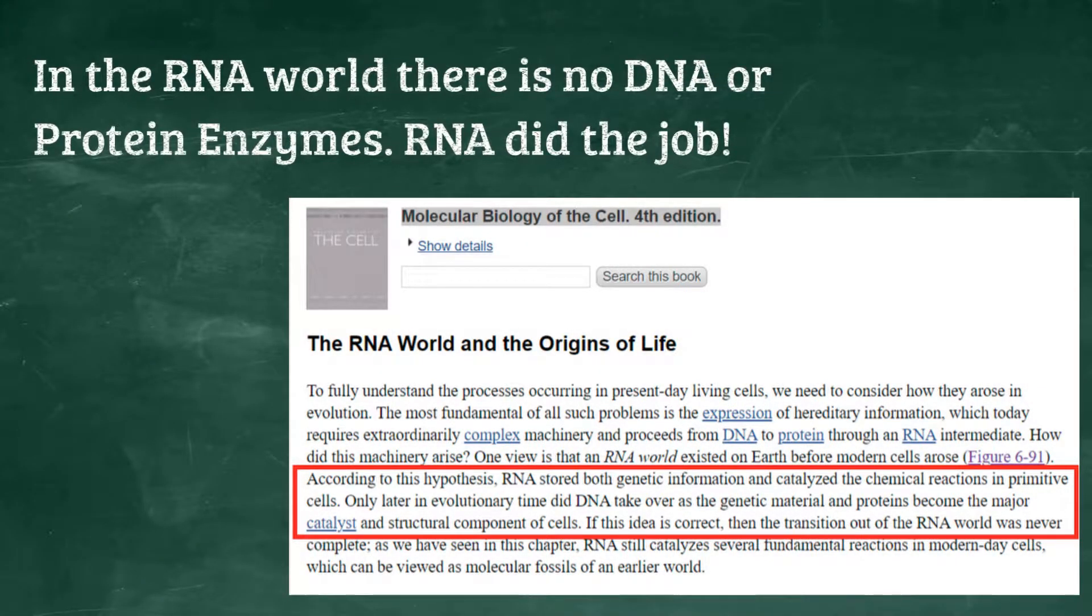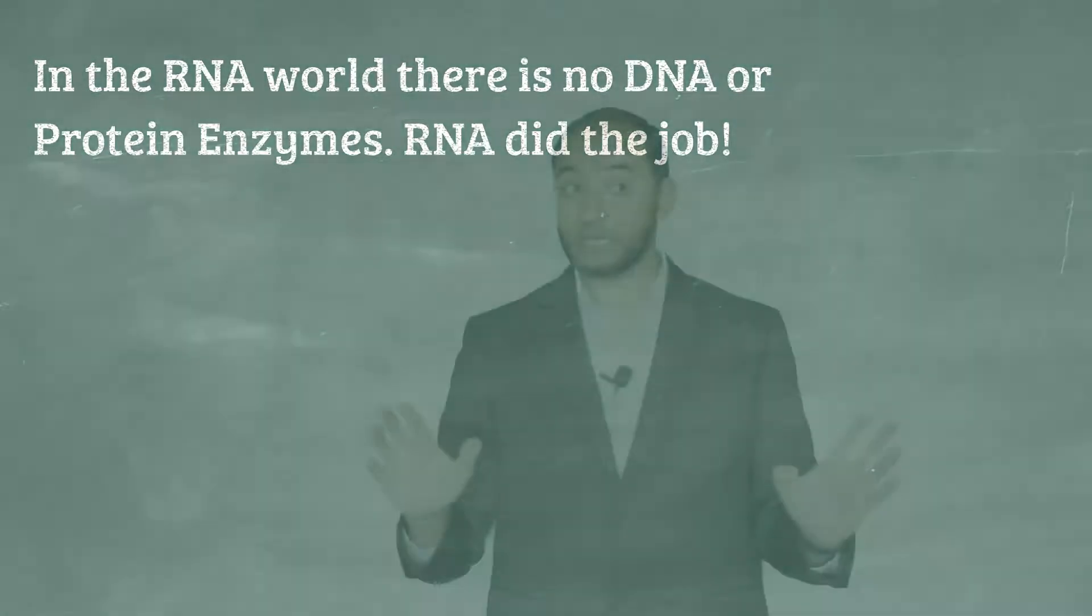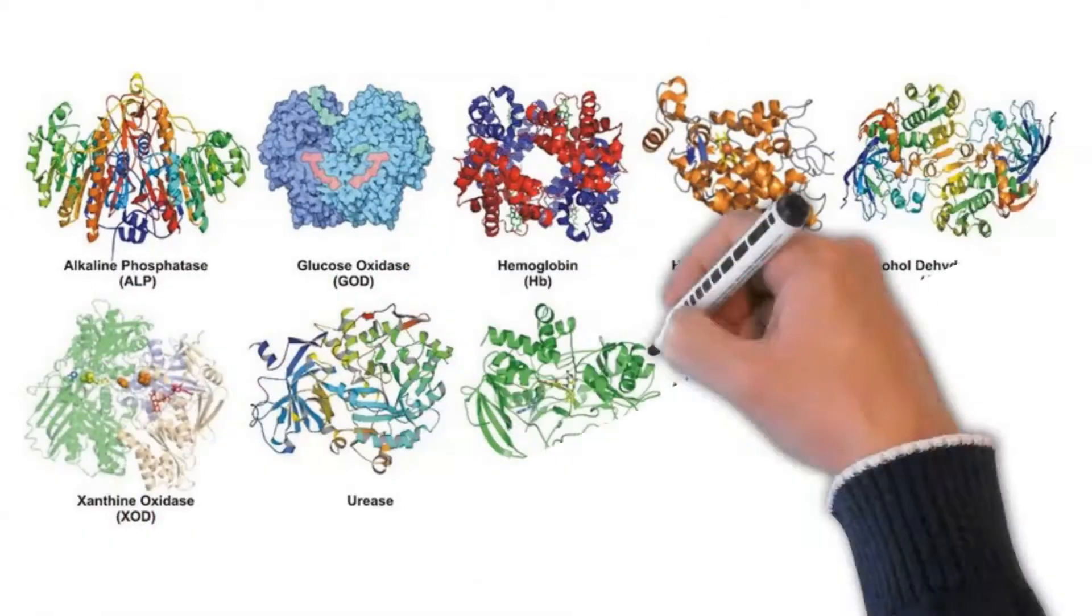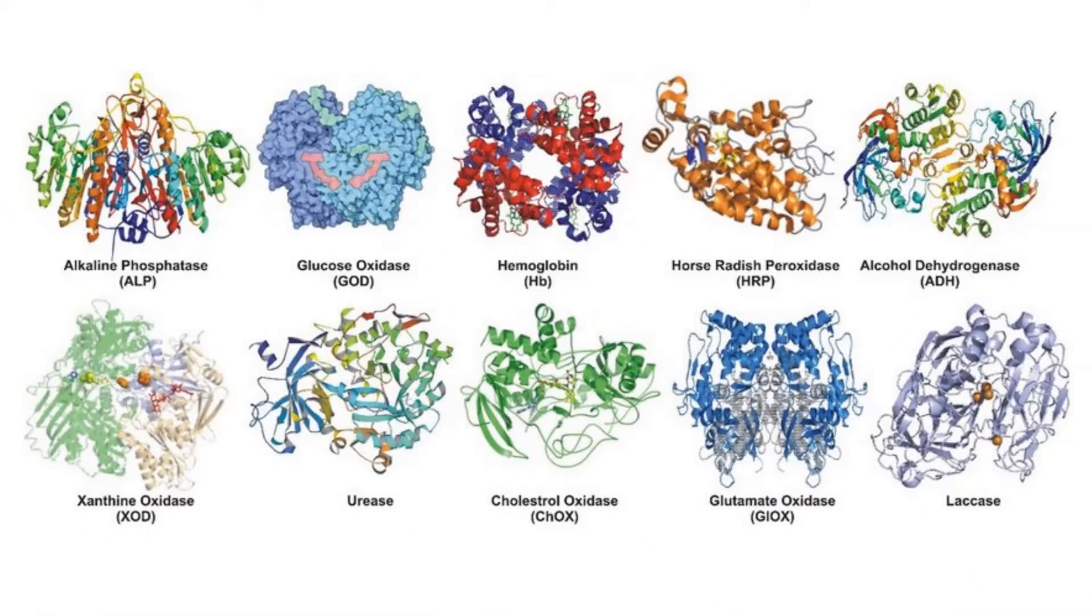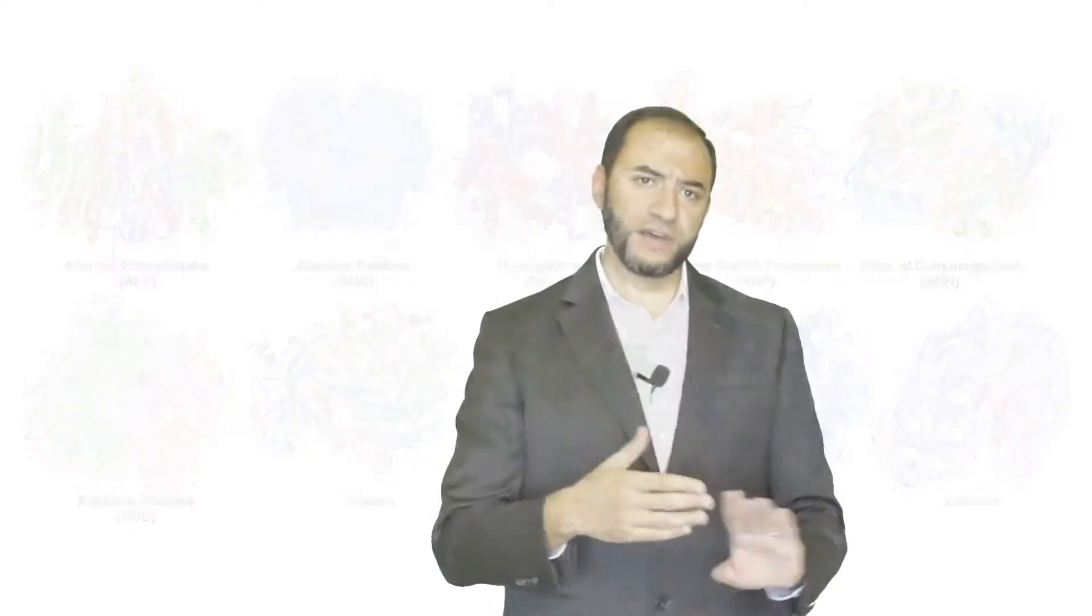Well, first, we need to establish that life needs enzymes because enzymes in the cell can make chemical reactions happen in the order of trillions of trillions of times faster than if you leave them to happen autonomously. It means that without enzymes, reactions that are essential for life will practically never happen in any proper time.